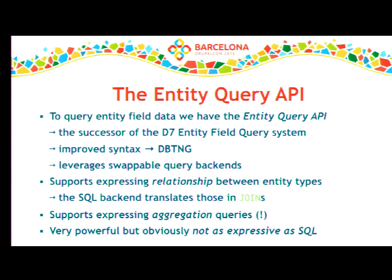What's the entity query API? It's the successor of the entity query API from Drupal 7, with a much easier and streamlined syntax that's really close to the dbtng one. Writing entity queries will look very familiar to those already used to dbtng. As in D7, it leverages swappable query backends tied to the storage backends configured for a specific entity type — you can plug in as many query backends as you need, and the query syntax remains the same.